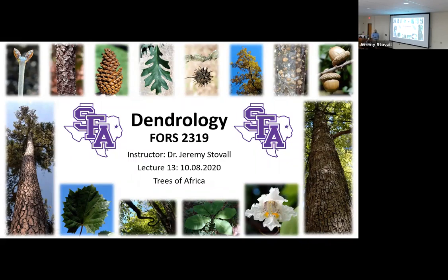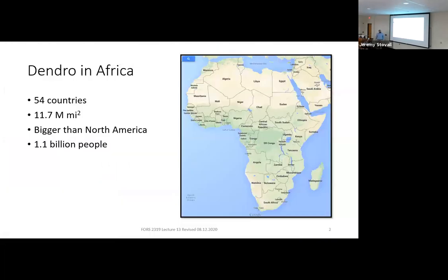Today we'll be talking about Trees of Africa, continuing our unit where we're looking at different trees of the world. For context, Africa is 54 countries covering 11.7 million square miles. It's the second largest continent behind Asia, home to 1.1 billion people — so incredibly diverse.